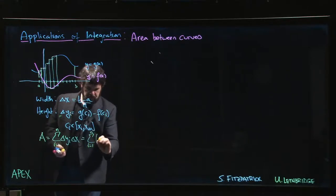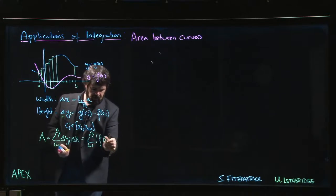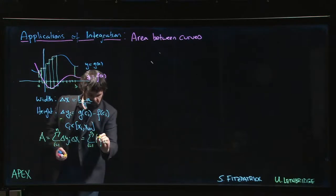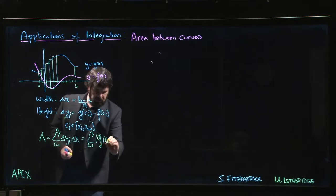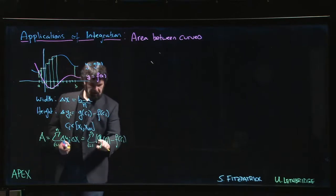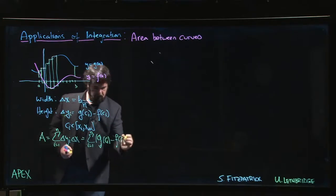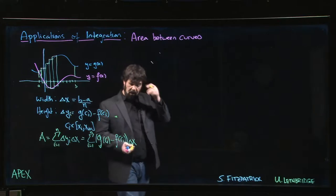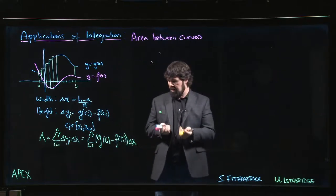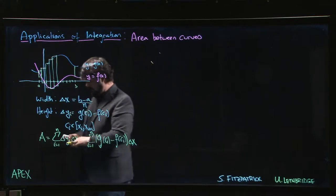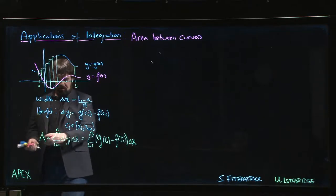It's a sum i going from one to n - we should be careful, not f, but g. This is one source of mistakes that a lot of people make, including myself apparently. g of ci minus f of ci times delta x. That looks an awful lot like a Riemann sum. It is - if we're considering the function g of x minus f of x, which is a function in its own right, that's a perfectly good Riemann sum.